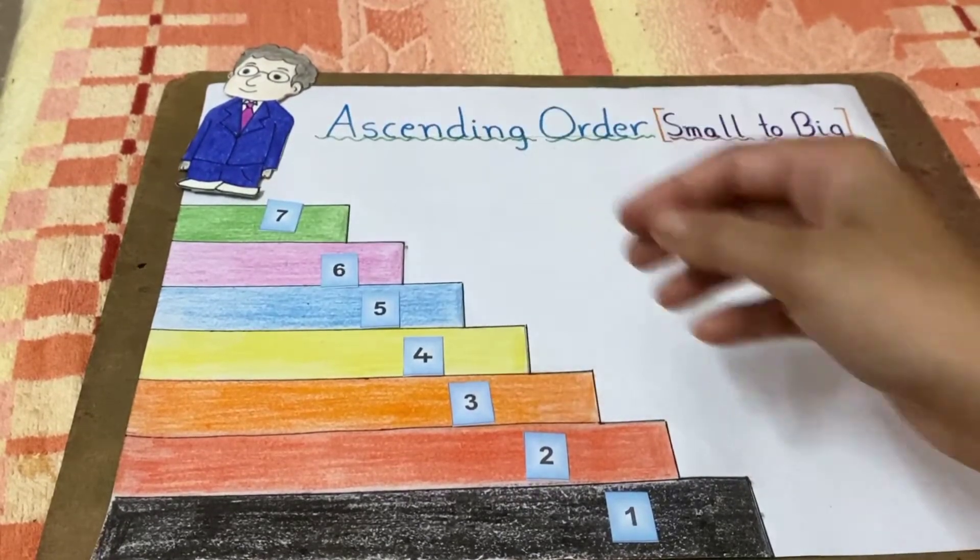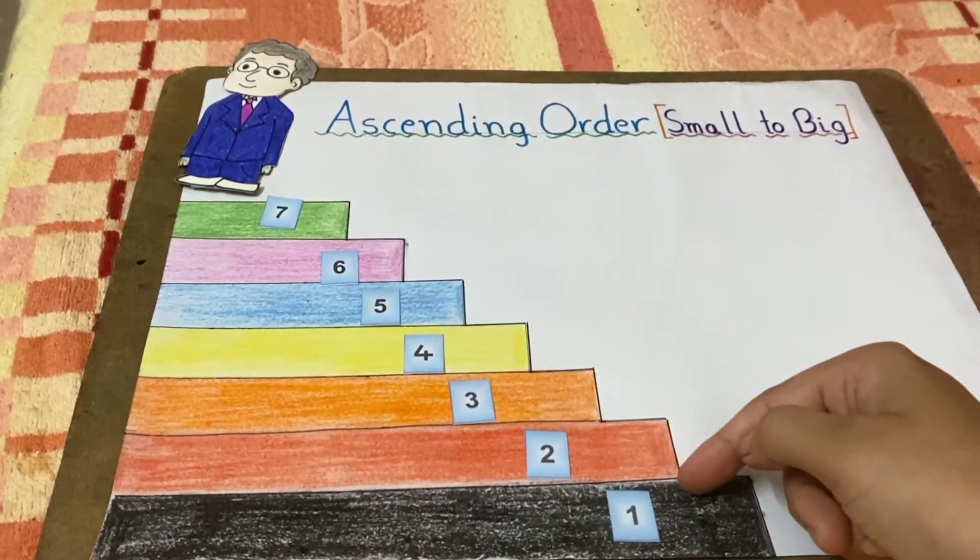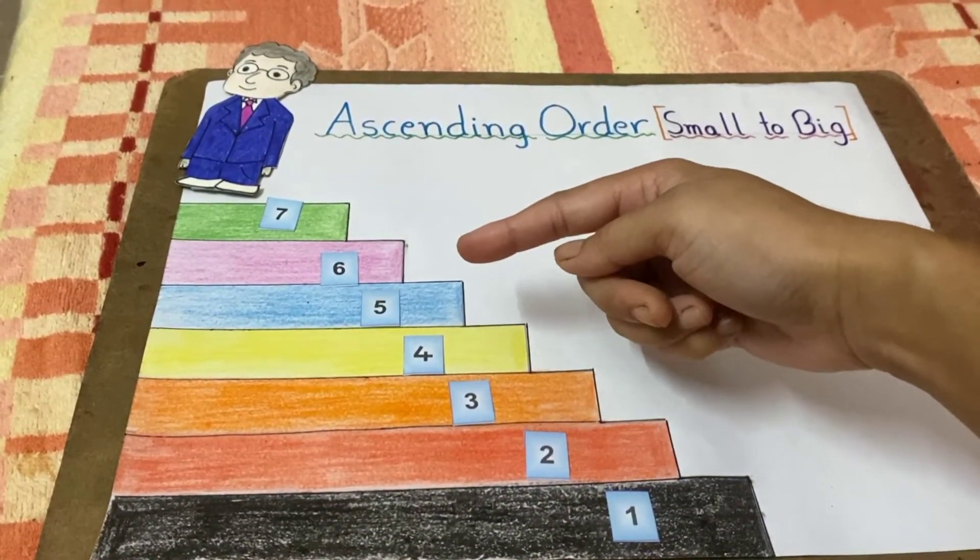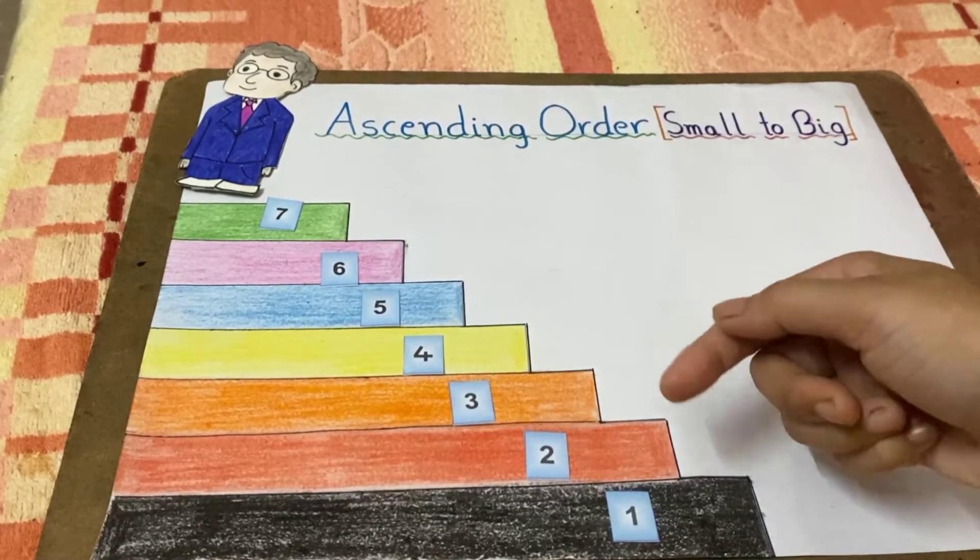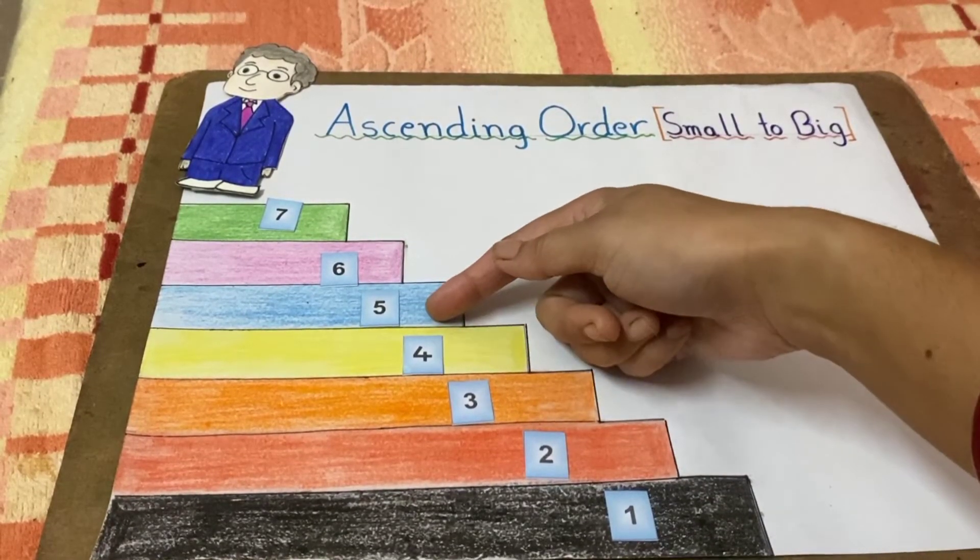Therefore, ascending order means small number to big number, or when we move from downstairs to upstairs, the number keeps on increasing. That's why we call it ascending order.